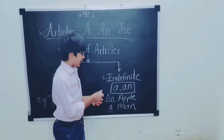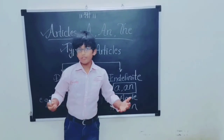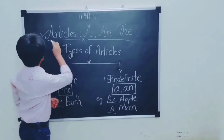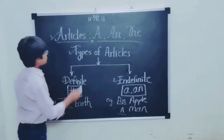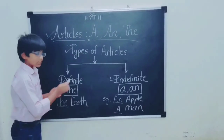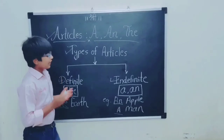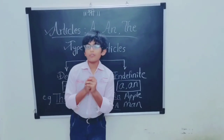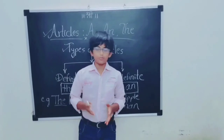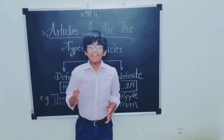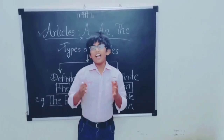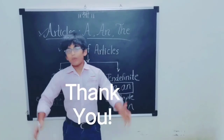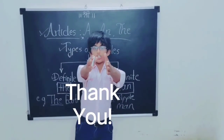So this was how to use 'a' and 'an' and where to put them. Today we have learned about articles — what articles are, the types of articles: definite and indefinite. This was the end of the video. Thank you for watching till the end. Please subscribe and like our channel and tap the bell icon for future video notifications. Thank you — Think Beyond the Brain.